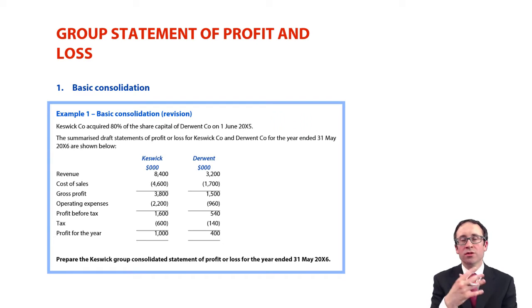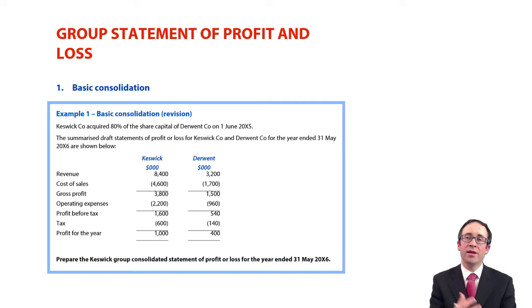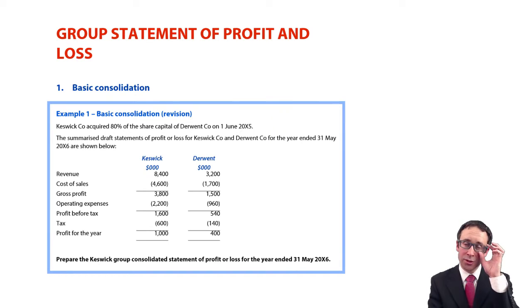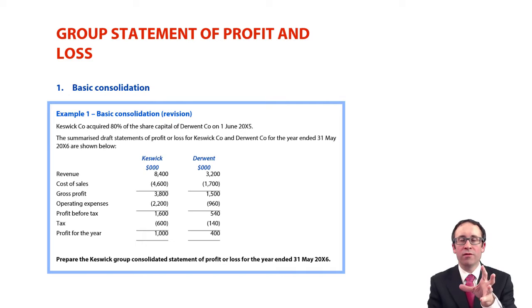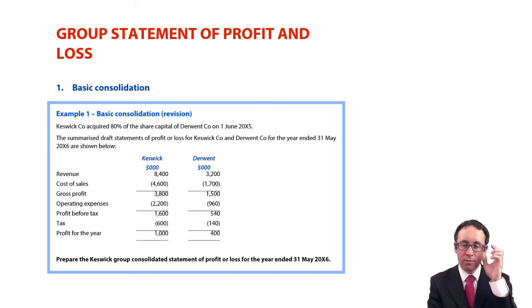The share of the profits that they do not own is what belongs to the non-controlling interest. So, once we've consolidated the revenues, the costs, and the profit, we will then need to show the non-controlling interest — what of that profit for the year belongs to the NCI, and what belongs to the owners of the parent.